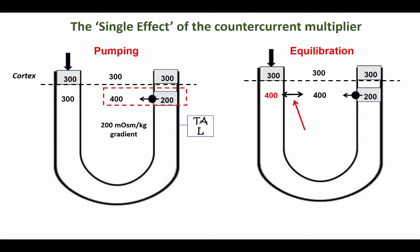Water can then escape out of the descending limb and equilibrate with the medullary interstitium at this level. So what we are left with is a descending limb that is slightly hypertonic, an ascending limb that is slightly hypoosmotic, and an interstitium that is hyperosmotic.